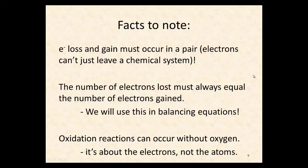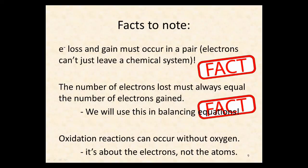OK, some facts to note. Electron loss and gain must occur in a pair. So we're not having electrons just magically disappearing from our chemical system. That's a fact. Secondly, the number of electrons lost must always equal the number of electrons gained. This is really important. This is relating to the conservation of charge, the conservation of mass. So we'll be using this in balancing equations. Fact. And finally, oxidation reactions can occur without oxygen, because it's about the electrons and it's not about the atoms specifically. Although initially this was discovered in relation to oxygen, hence the name oxidation. Fact.